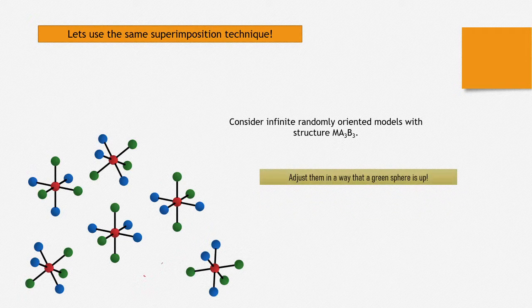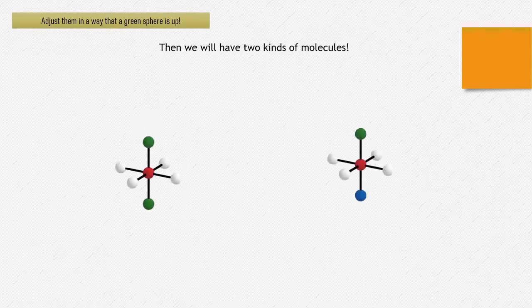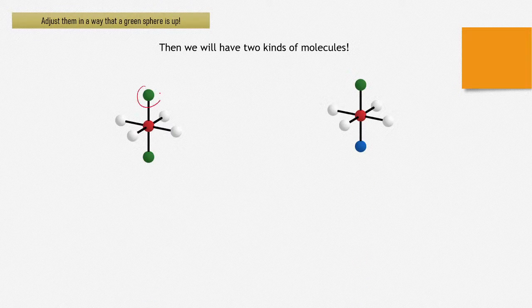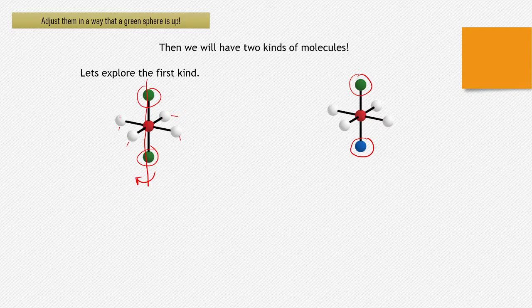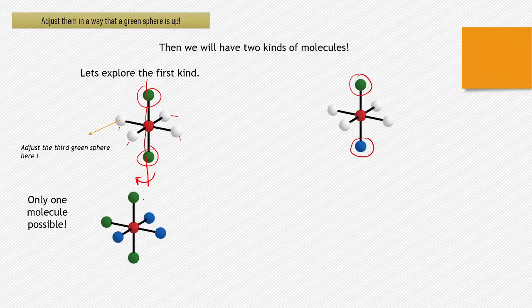I bring the green one and adjust them so that the green sphere is pointing up. When the green sphere is pointing up, we will have two different kinds of molecules. In the first kind, the green will be opposite to the green. So the third green will be somewhere in one of these four positions. Wherever it is, we can always adjust it by rotating about this axis. That way we understand there is only one molecule possible when the two greens are pointing opposite to each other.